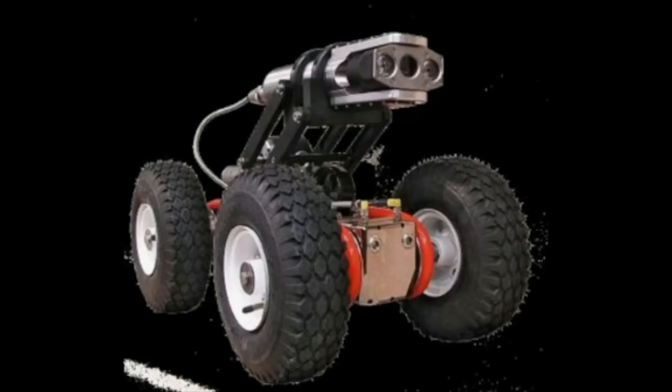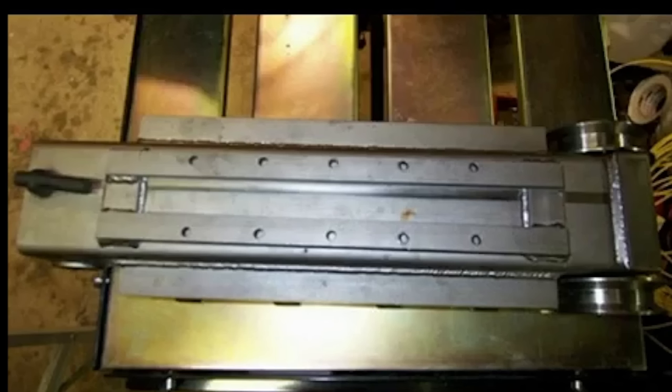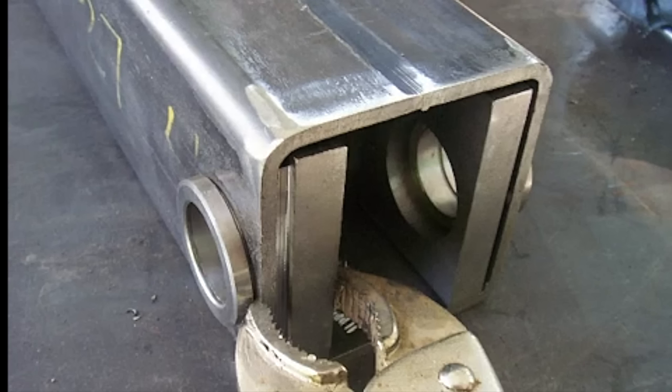One of the first jobs that came along was this sewer crawler. It's a remote control tractor with a camera on top to inspect sewers. It started off as a piece of square tubing and it's just got stuff welded on it.